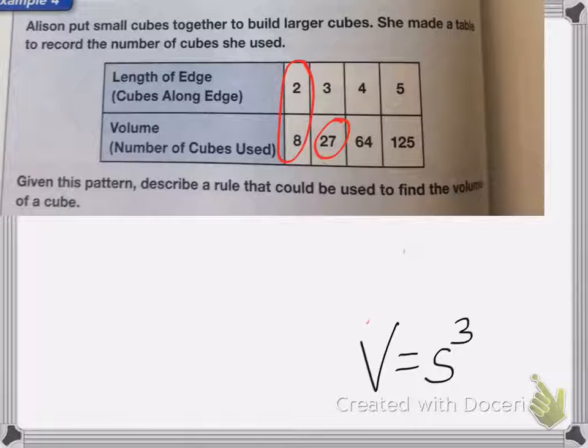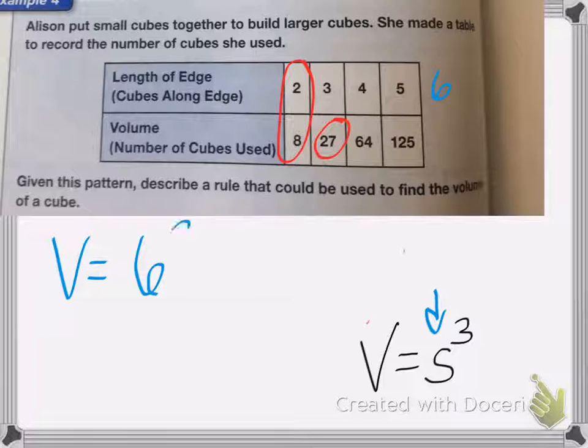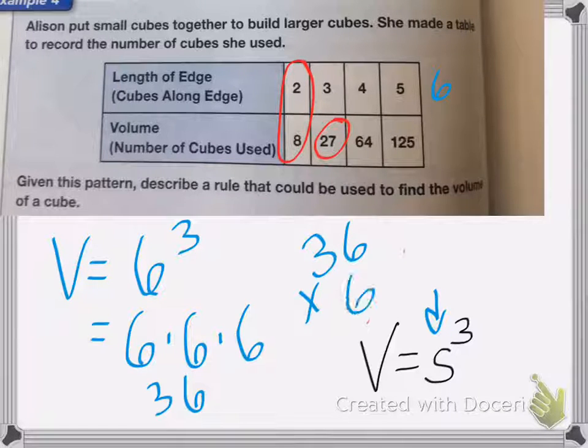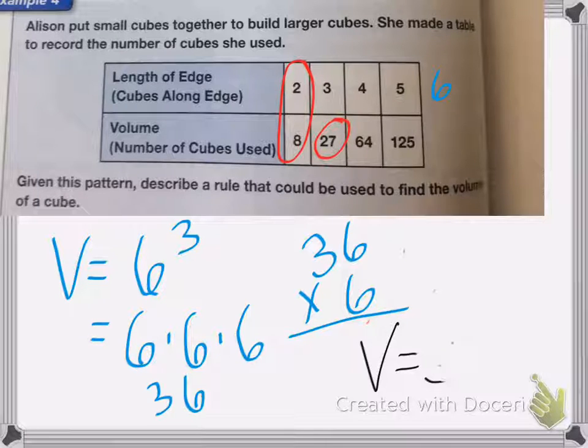So my rule is the volume equals the length of a side s cubed. So let's say I wanted to find out what my volume is if the length of my side was six. So I just plug that into my equation here. Volume equals 6 cubed. So that's 6 times 6 times 6, 6 times 6 is 36. And then I do 36 times 6, which I do not know off the top of my head. So I'm going to go ahead and solve it.